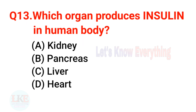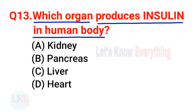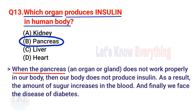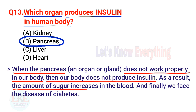Question 13: Which organ produces insulin in the human body? A) Kidney, B) Pancreas, C) Liver, D) Heart. The right answer is option B, Pancreas. When the pancreas does not work properly, the body does not produce insulin. As a result, the amount of sugar increases in the blood and we face the disease of diabetes.